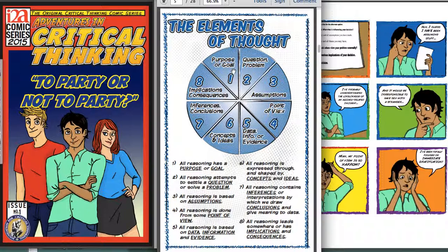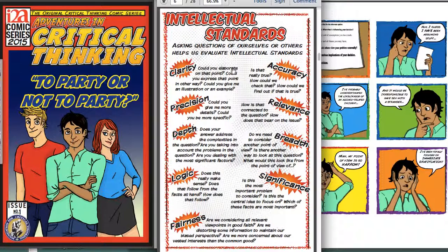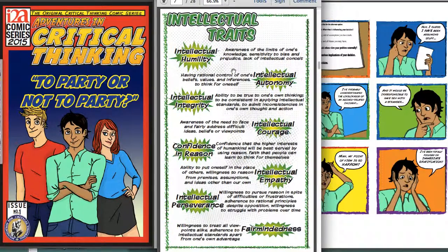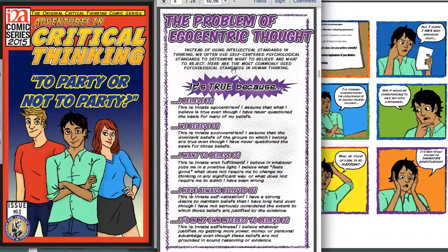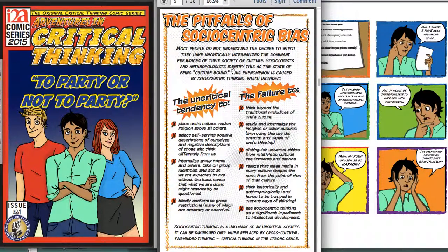There are a number of critical thinking pages. This is the Elements of Thought from Paul and Elder's Miniature Guide to Critical Thinking Concepts and Tools. Here are the intellectual standards, in the comic book's own style, intellectual traits, egocentric bias, and sociocentric bias.